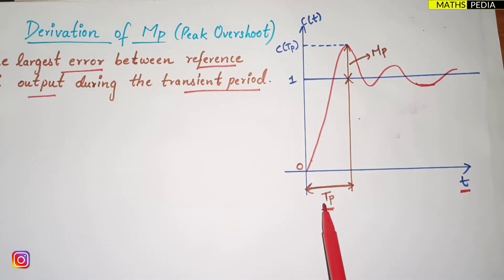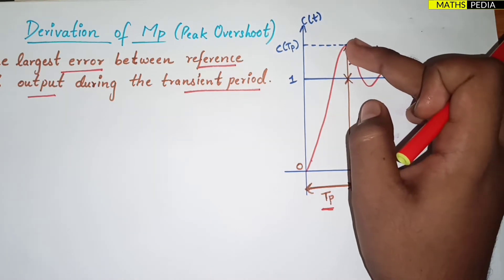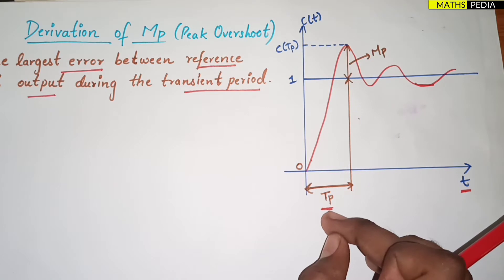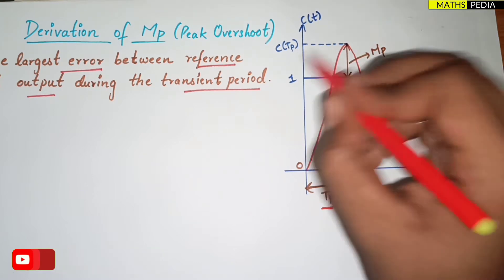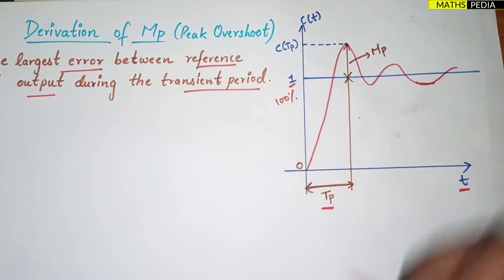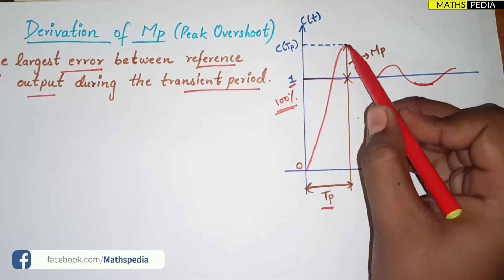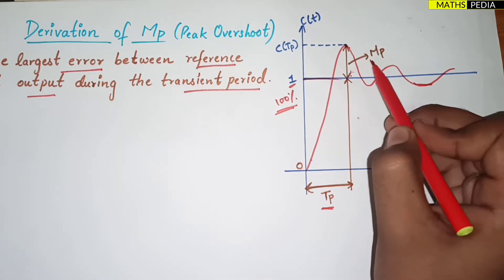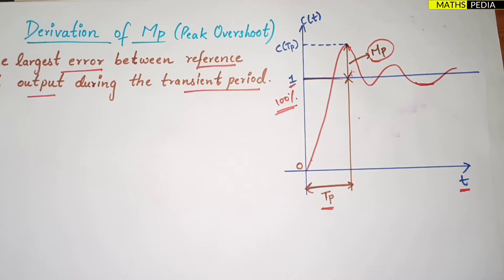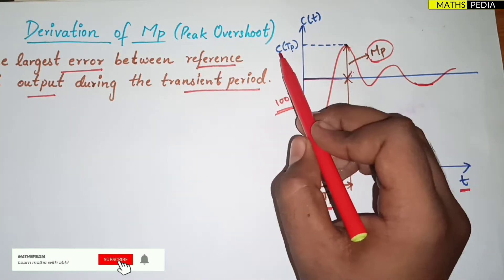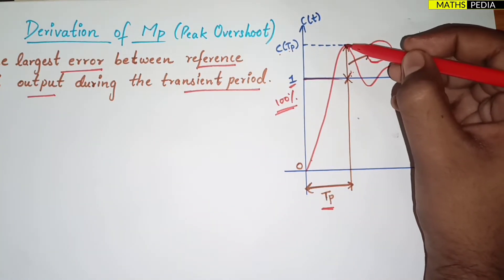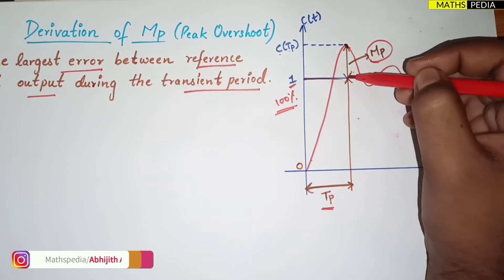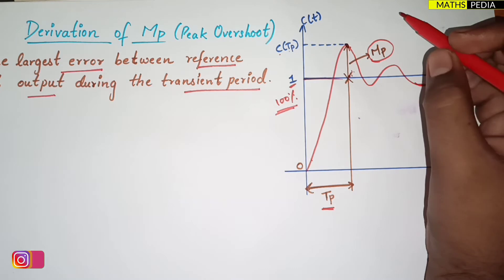The time from zero to the first peak value is the peak time tp. From the peak point down to 100% of the final value — that 100% line represents the final value. The largest error between the peak point c(tp) and 100% of the final value is what we call peak overshoot Mp.